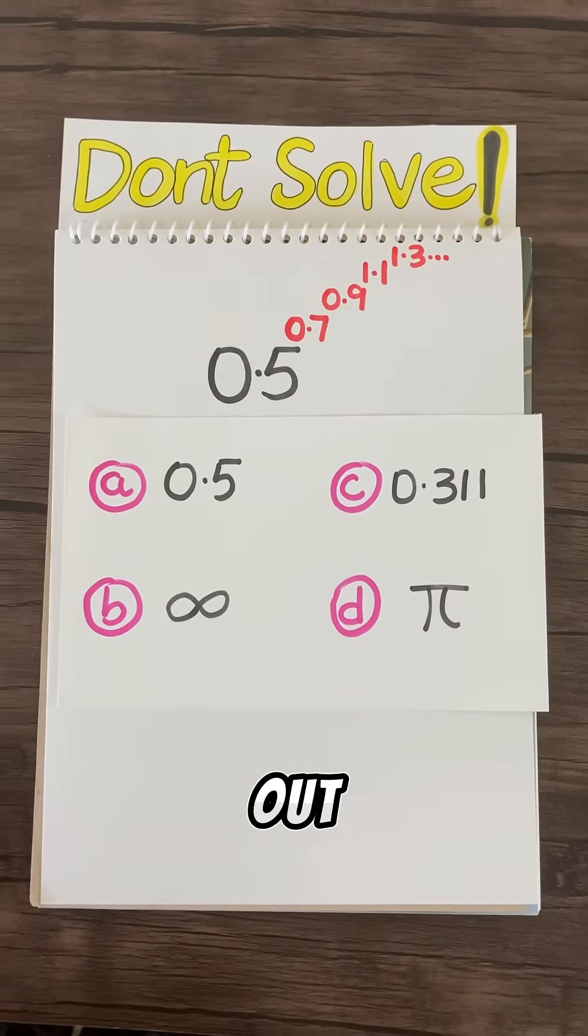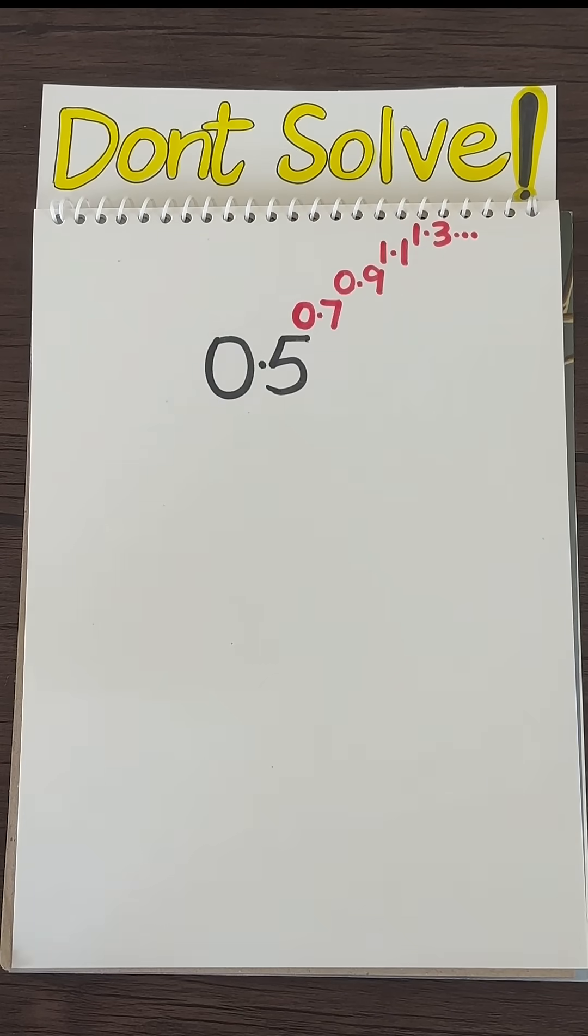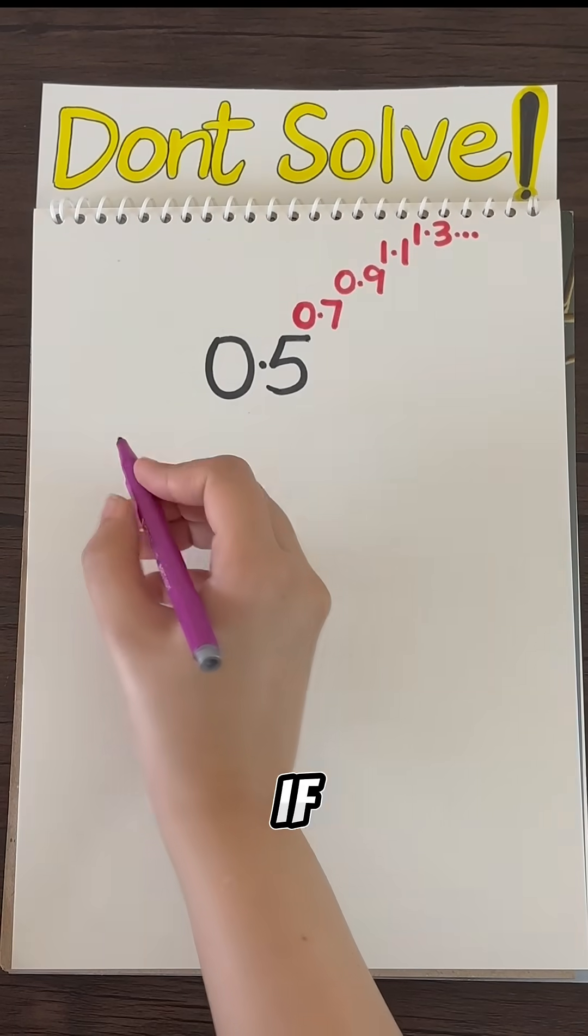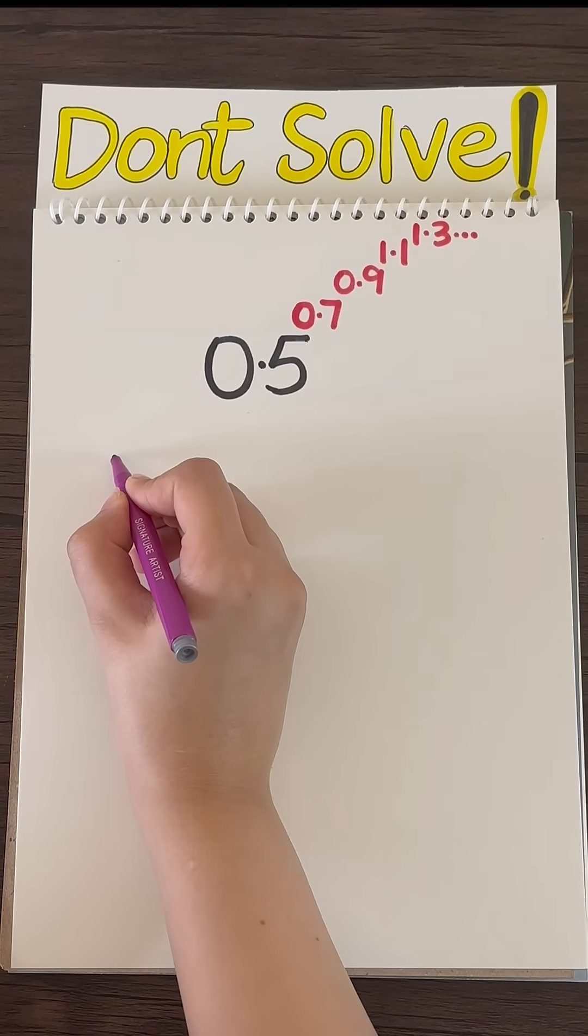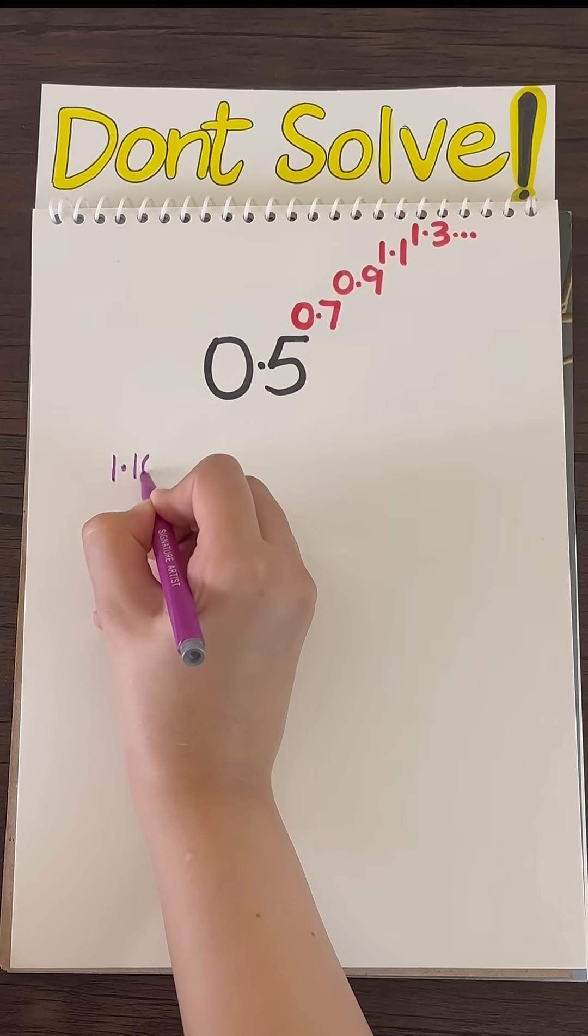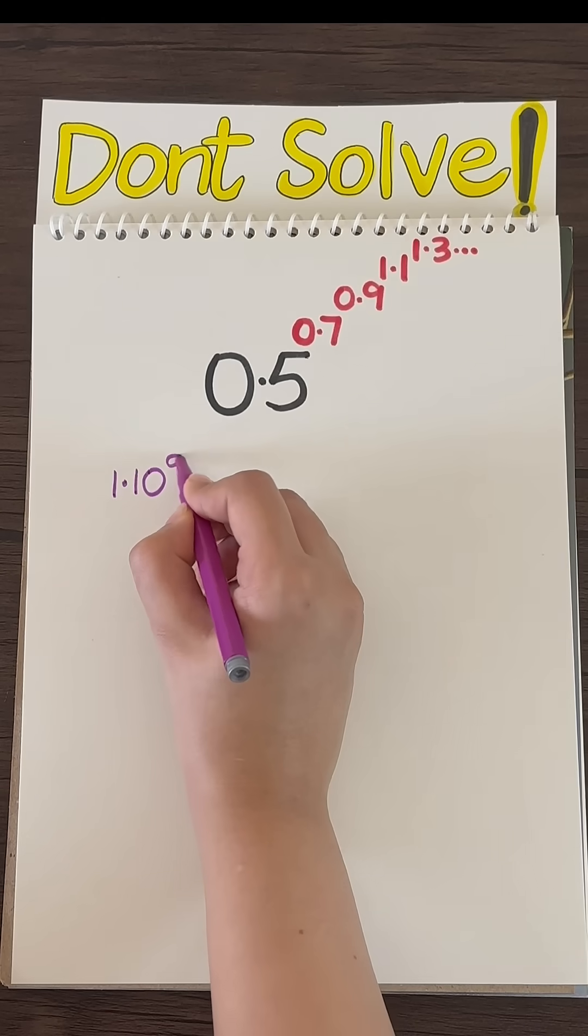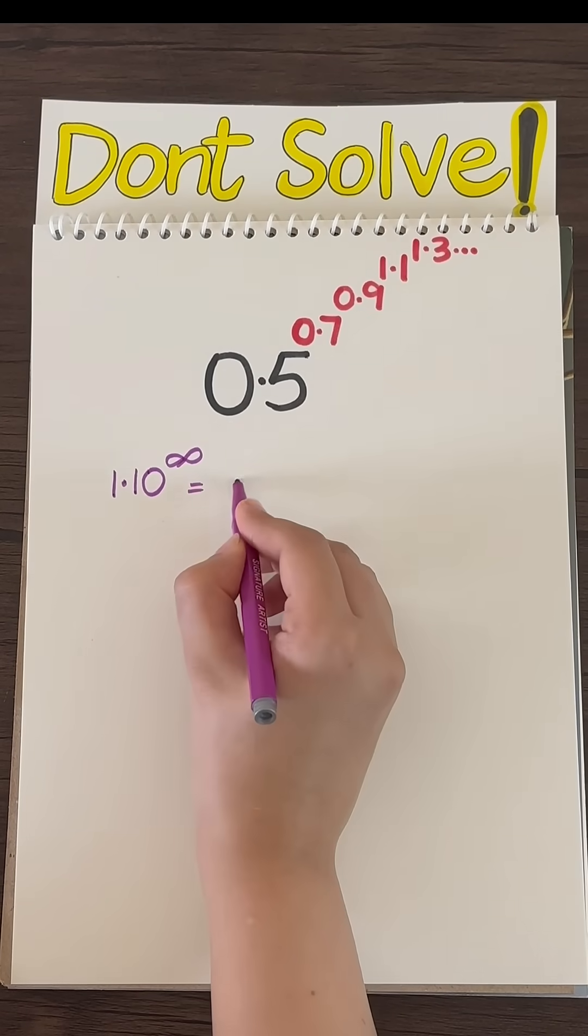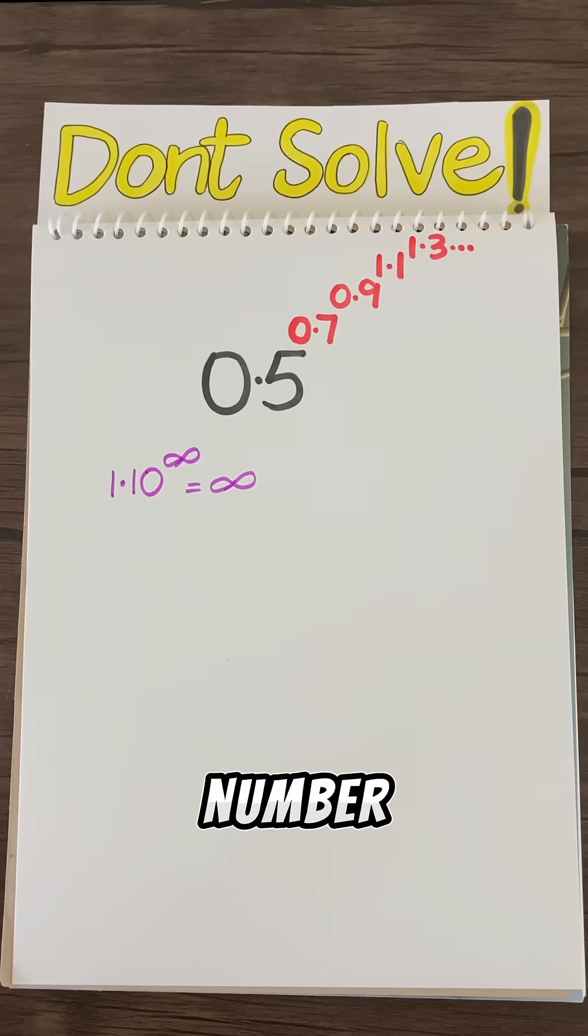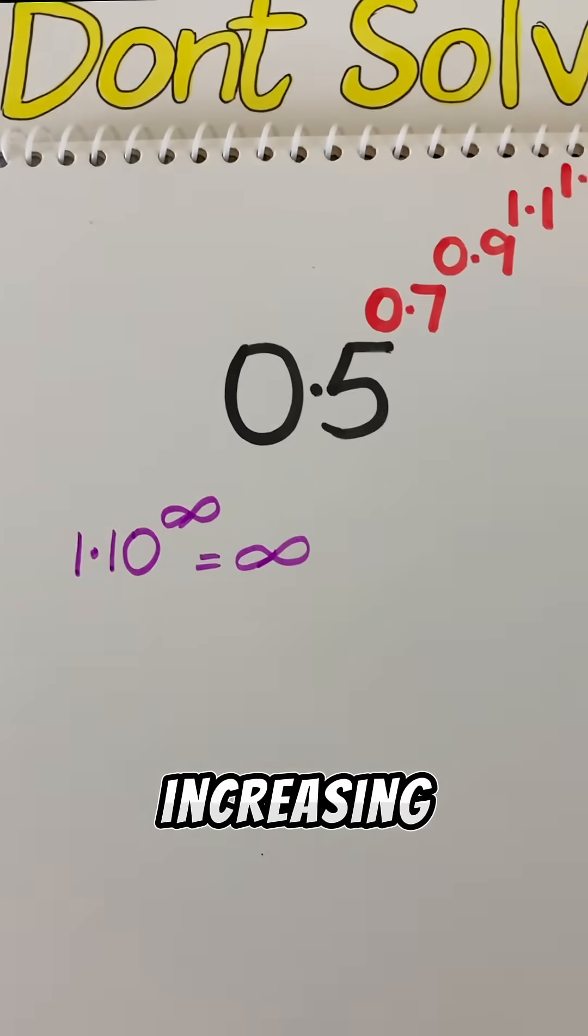Well, we'll find out. We first have to think about exponential property. So if we have a number greater than 1, let's just write that down. Take 1.01 for example and we raise it to an infinitely large power. Then it's equal to infinity since this number keeps increasing.